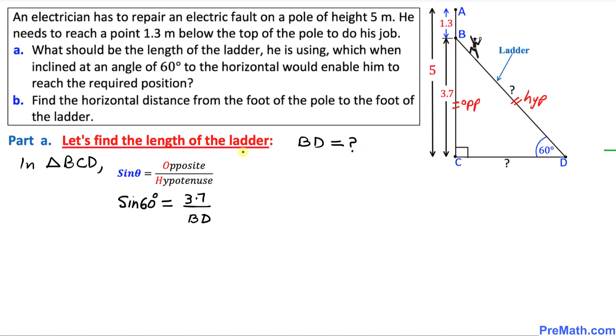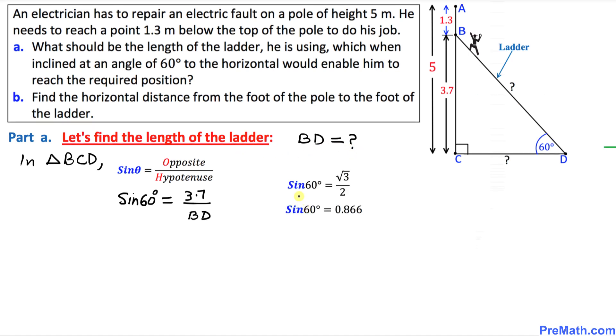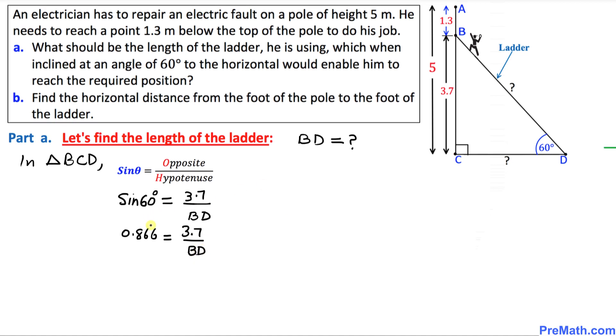Because that represents the length of the ladder. And we know that the sine of 60 degrees is square root of 3 over 2, or in terms of decimal, it's going to be 0.866. I'm going to replace this sine of 60 degrees by 0.866 equal to 3.7 over BD. And now, we need to calculate BD. Very first thing, I'm going to put 1 underneath this decimal.